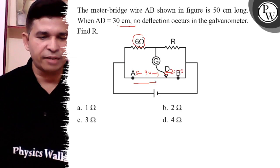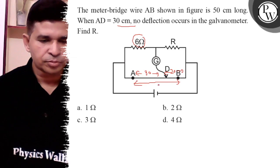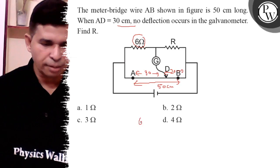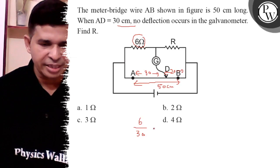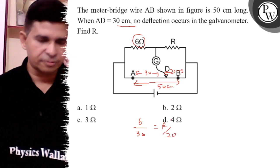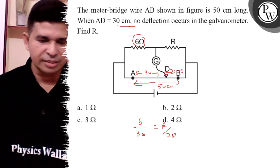The length is 50 cm from A to B, clear? So 6 upon 30 cm is equal to R upon 20 cm. In this case, what is the value of R?